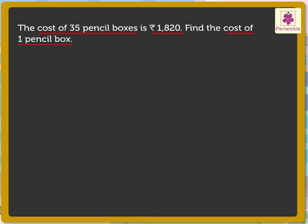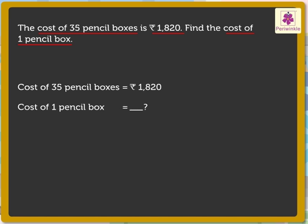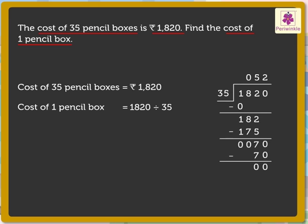We write the statements as: the cost of 35 pencil boxes is equal to Rs. 1820. Then, cost of one pencil box is how much? Therefore, to find the cost of one pencil box, we divide the total cost by the total number of boxes. Let us do the division. We get the answer as 52.